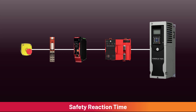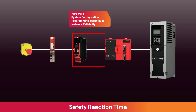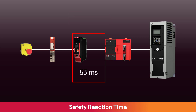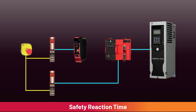A produce/consume connection adds an additional controller and a communication connection between the controllers. The amount of reaction time increase is dependent on the hardware system configuration, programming techniques, and network reliability. For this configuration, the safety produce/consume connection added 53 milliseconds to the calculated single fault reaction time — an increase of about 50% from a single controller system. If the additional reaction time added by the produce/consume connection exceeds the safety functional specification, the application may require using hardwired inputs or an input-only connection. Designing for optimum safety reaction is a topic for another video. That concludes today's lesson on safety produce and consume.